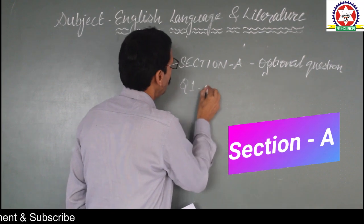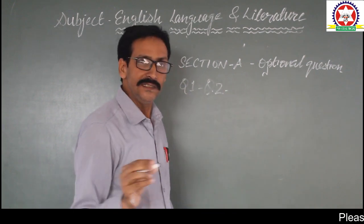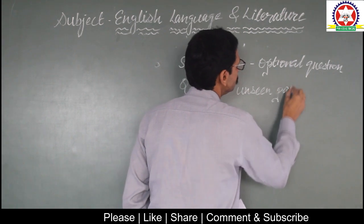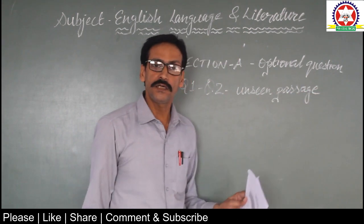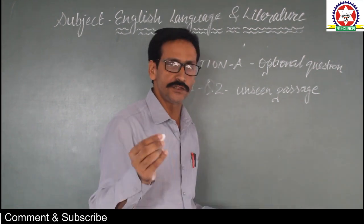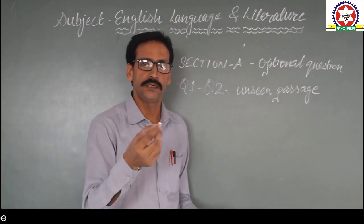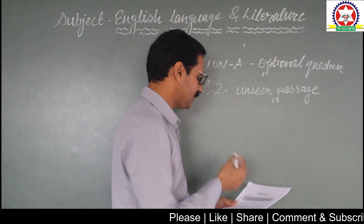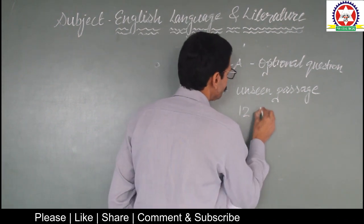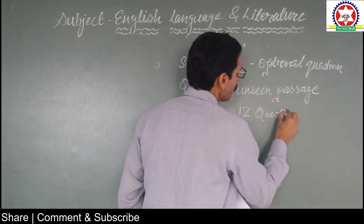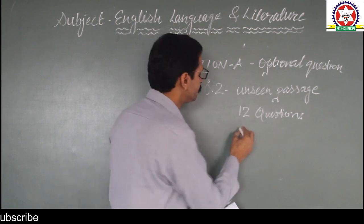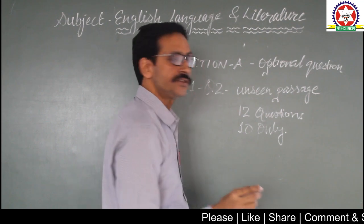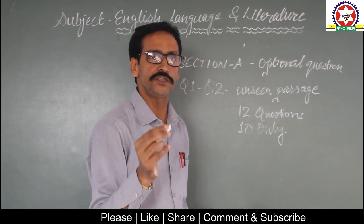Questions 1 and 2 are related to unseen passages — the same kind of unseen passages you have worked with in Class 9. In these unseen passages you are going to find 12 questions, and out of those 12 questions you will attempt 10 of them. All the questions have 4 options each.